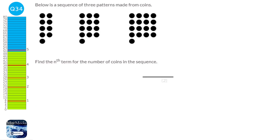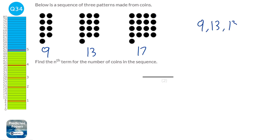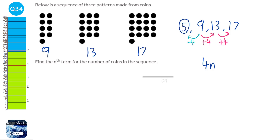Whenever we do these kind of questions it's always best to convert the pattern into numbers. Counting the dots, our sequence goes 9, 13, 17 — we're adding 4 each time. That means our sequence will involve 4n. We go backwards one step to find the 0th term: 9 take away 4 is 5. The 0th term tells us what to add on to the 4n, so 4n plus 5 will be our answer.